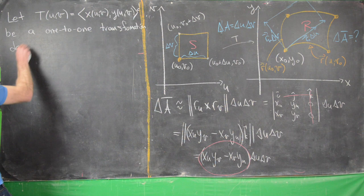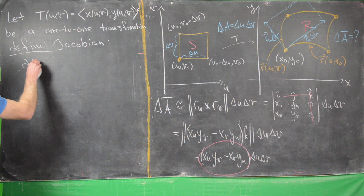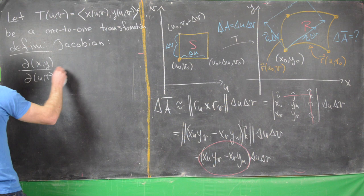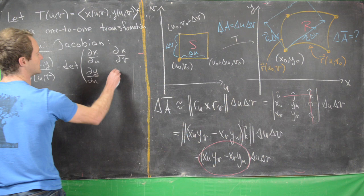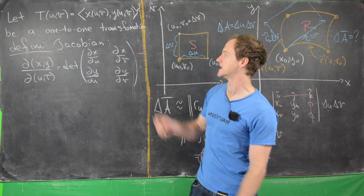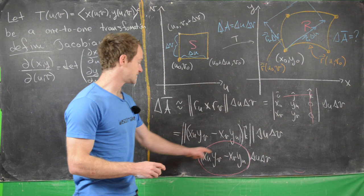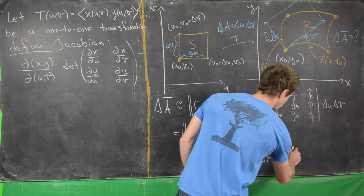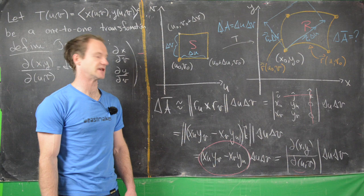We define the Jacobian of a two-variable transformation as ∂(x,y)/∂(u,v), which is the determinant of the 2×2 matrix with entries ∂x/∂u, ∂x/∂v in the first row and ∂y/∂u, ∂y/∂v in the second row. We use standard partial derivative notation here. So ΔA̅ ≈ [∂(x,y)/∂(u,v)] · Δu Δv, which will set up our change of variables formula very nicely.